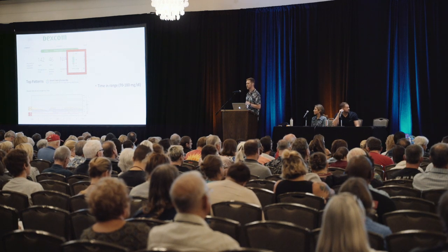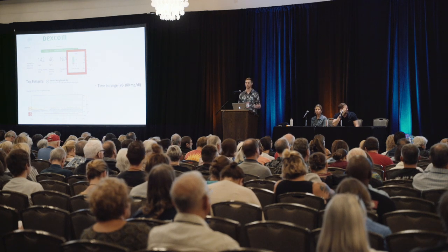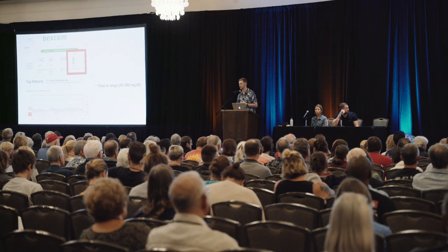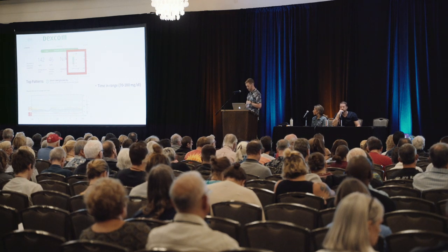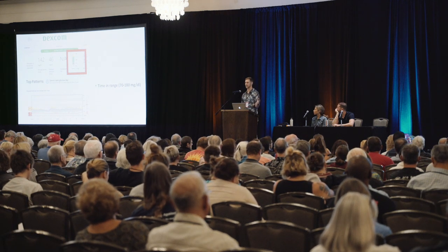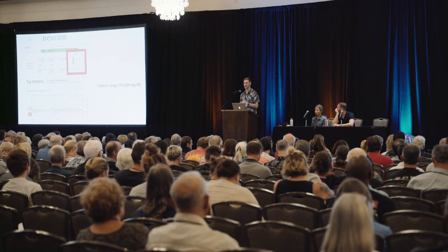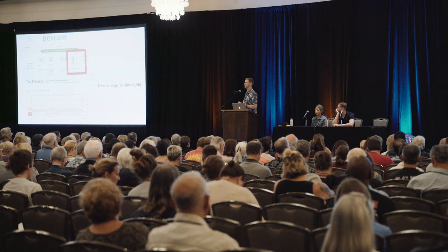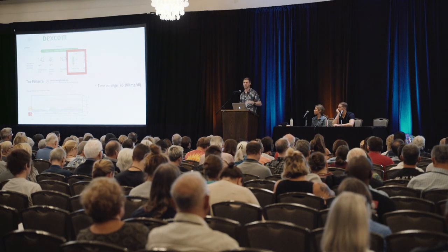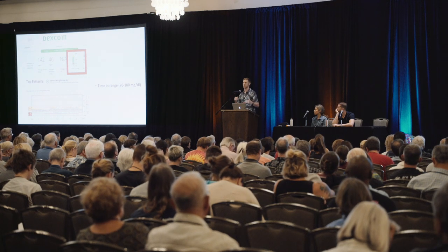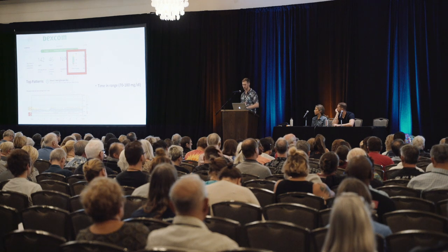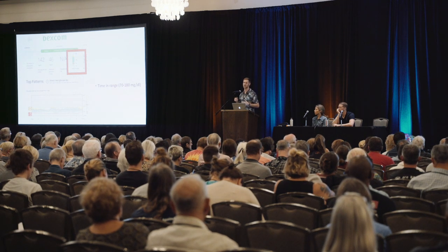The next section shows the time in range. You've probably heard that term a lot this weekend. Time in range, on the simplest definition, is the percent of time that you're spending with your blood sugar between 70 and 180. If you have a CGM, you can set your time in range targets. We encourage almost everybody to set their targets at 70 to 180 because those are the numbers used in research and guidelines, which helps you compare what you're doing to the broader standards.